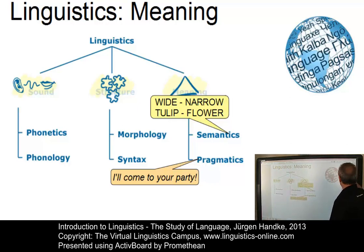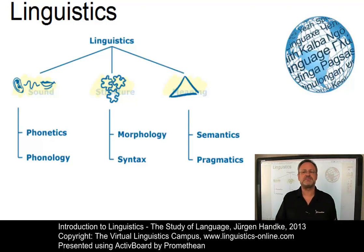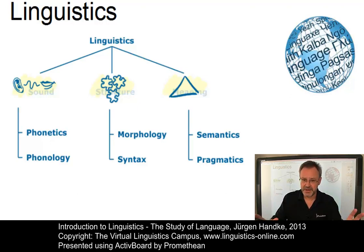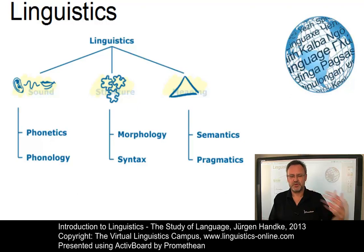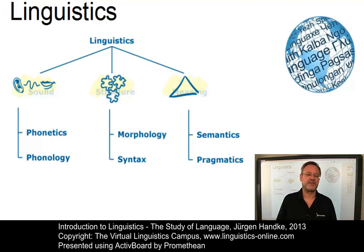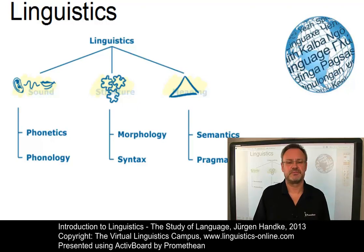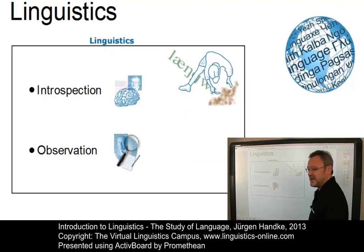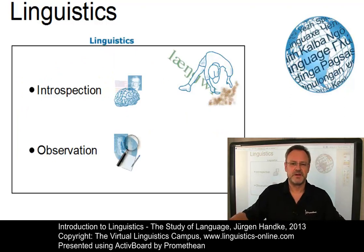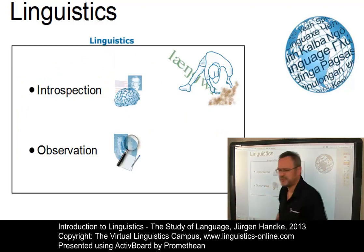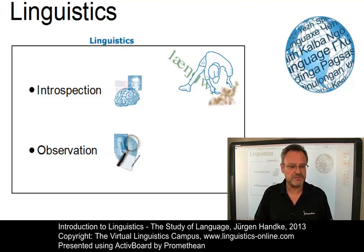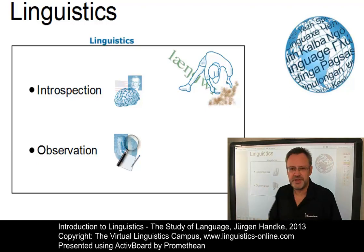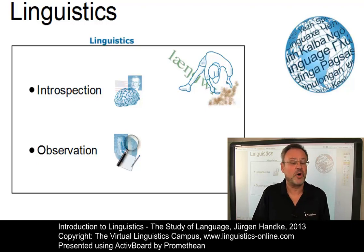Linguistics can be defined as the systematic study of language. It is often defined as a science which is objective, unbiased, data-oriented and reproducible. Linguists are concerned with how language actually does work rather than with how it ought to work. There are two approaches as to how languages can be examined: the introspective approach — data collection by means of introspection — and the observational approach, which concentrates on the observation of real facts.